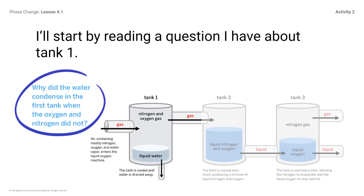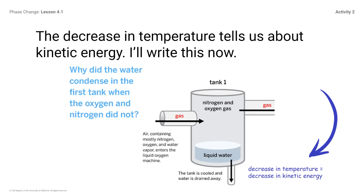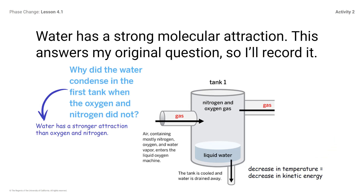I'll start by reading a question I have about tank one: Why did the water condense in the first tank when the oxygen and nitrogen did not? The decrease in temperature tells us about kinetic energy — decrease in temperature equals decrease in kinetic energy. Water has a strong molecular attraction — in fact, water has a stronger attraction than oxygen and nitrogen.